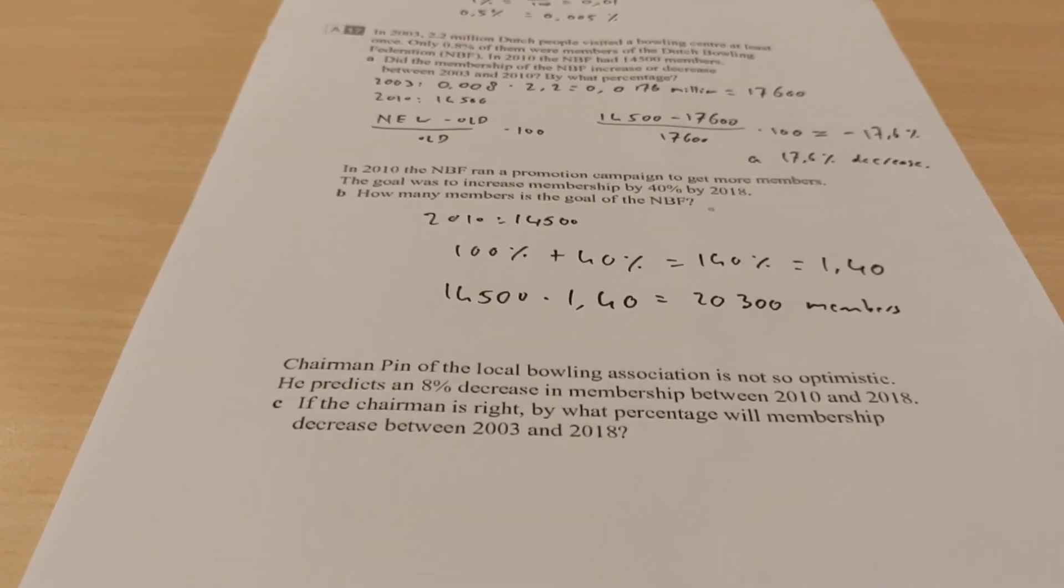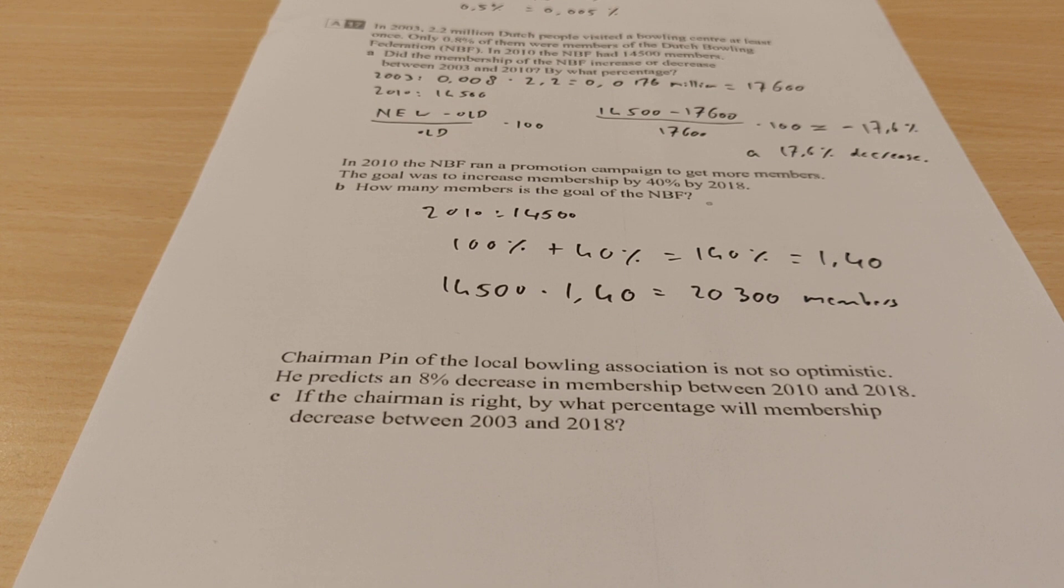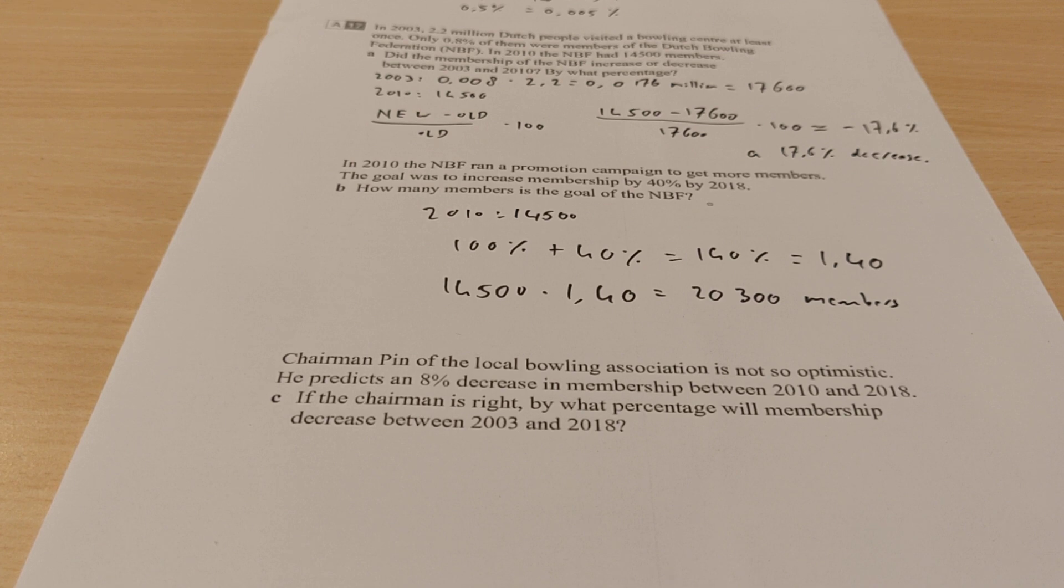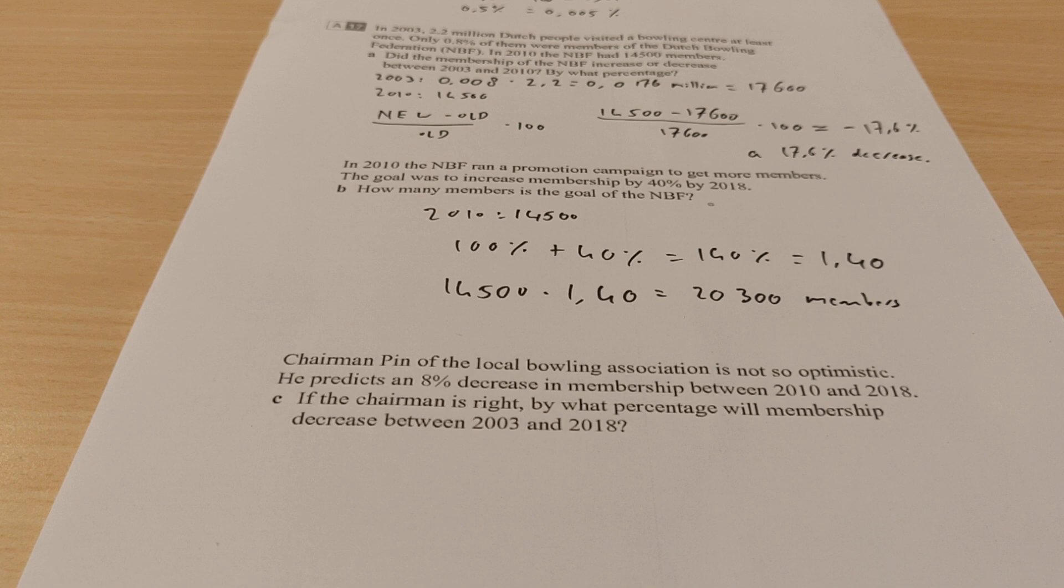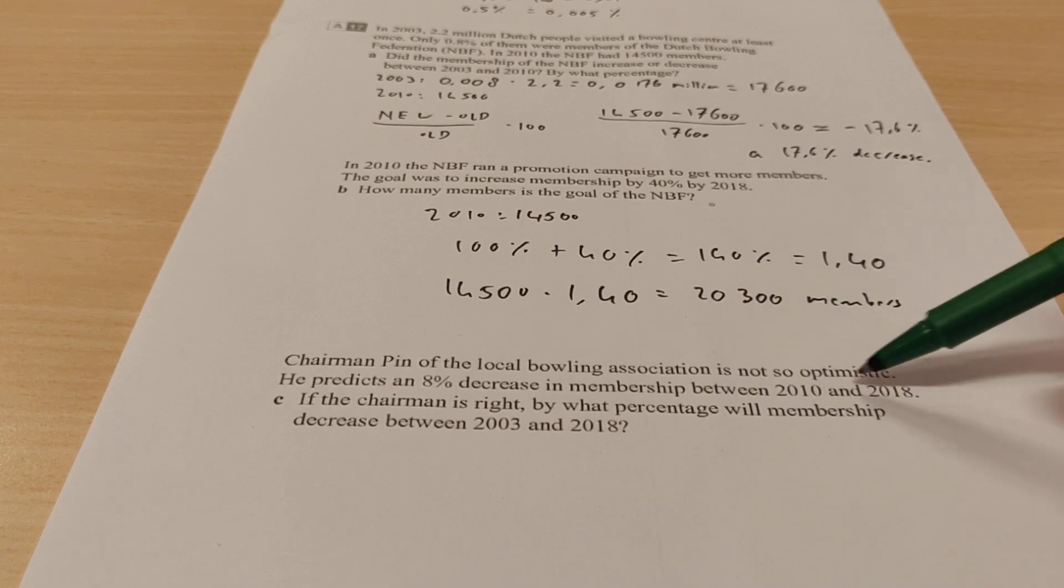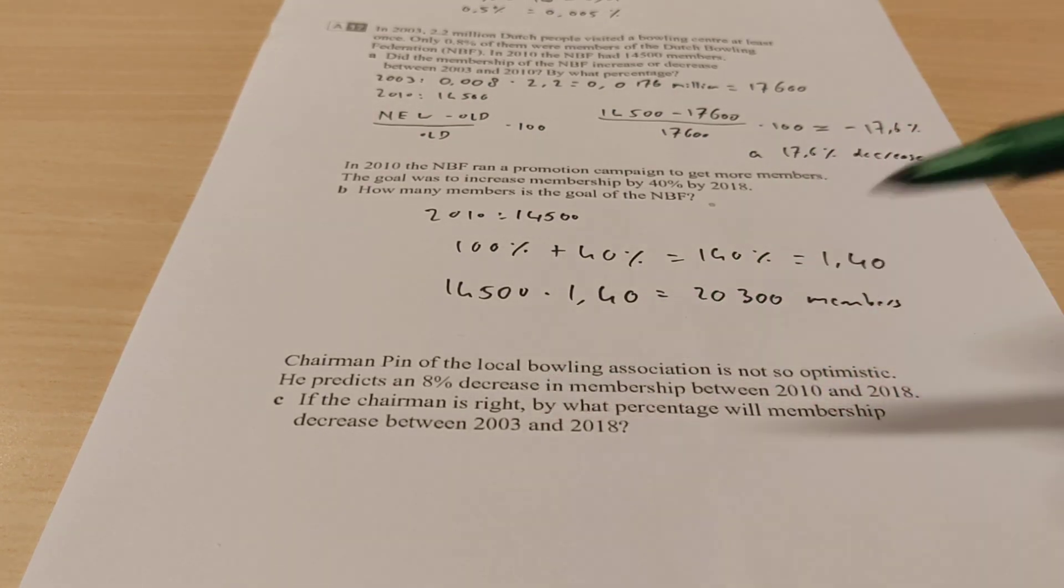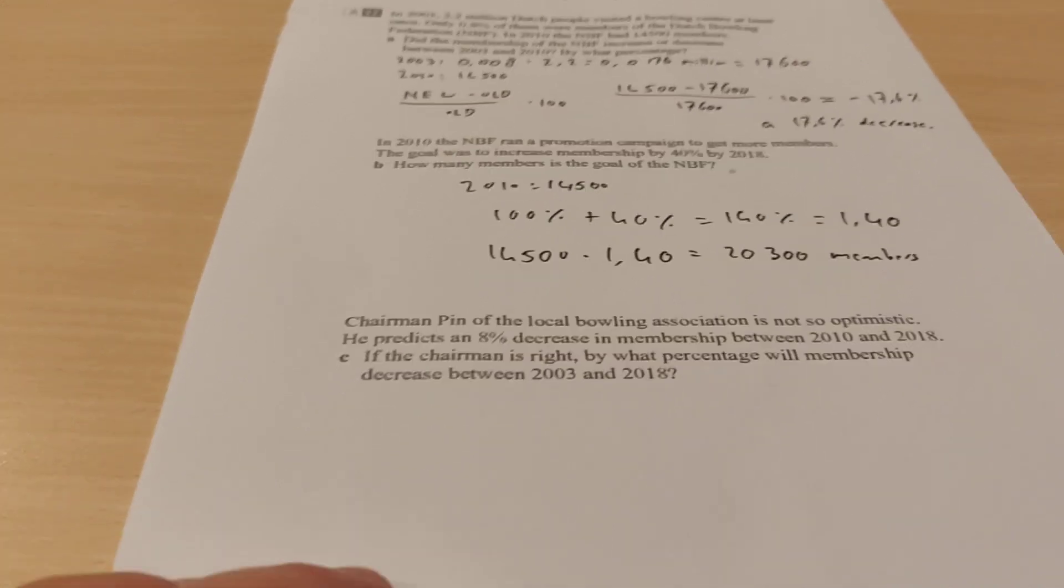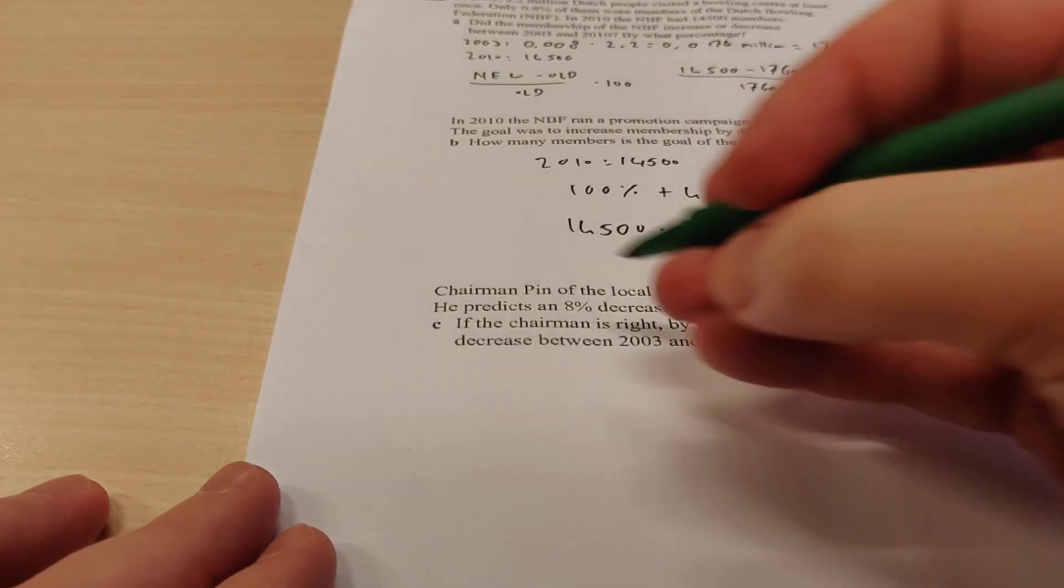And then we're going to go to C. It says, the chairman, Pin, that's the name of the guy. His name is Pin. Of the local bowling association is not so optimistic. He predicts an 8% decrease in the memberships between 2010 and 2018. If the chairman is right, by what percentage will the membership decrease by 2003 and 2018? So we know the decrease between these two numbers, but we don't know the decrease between those two numbers. I'm going to write down all the numbers of members.